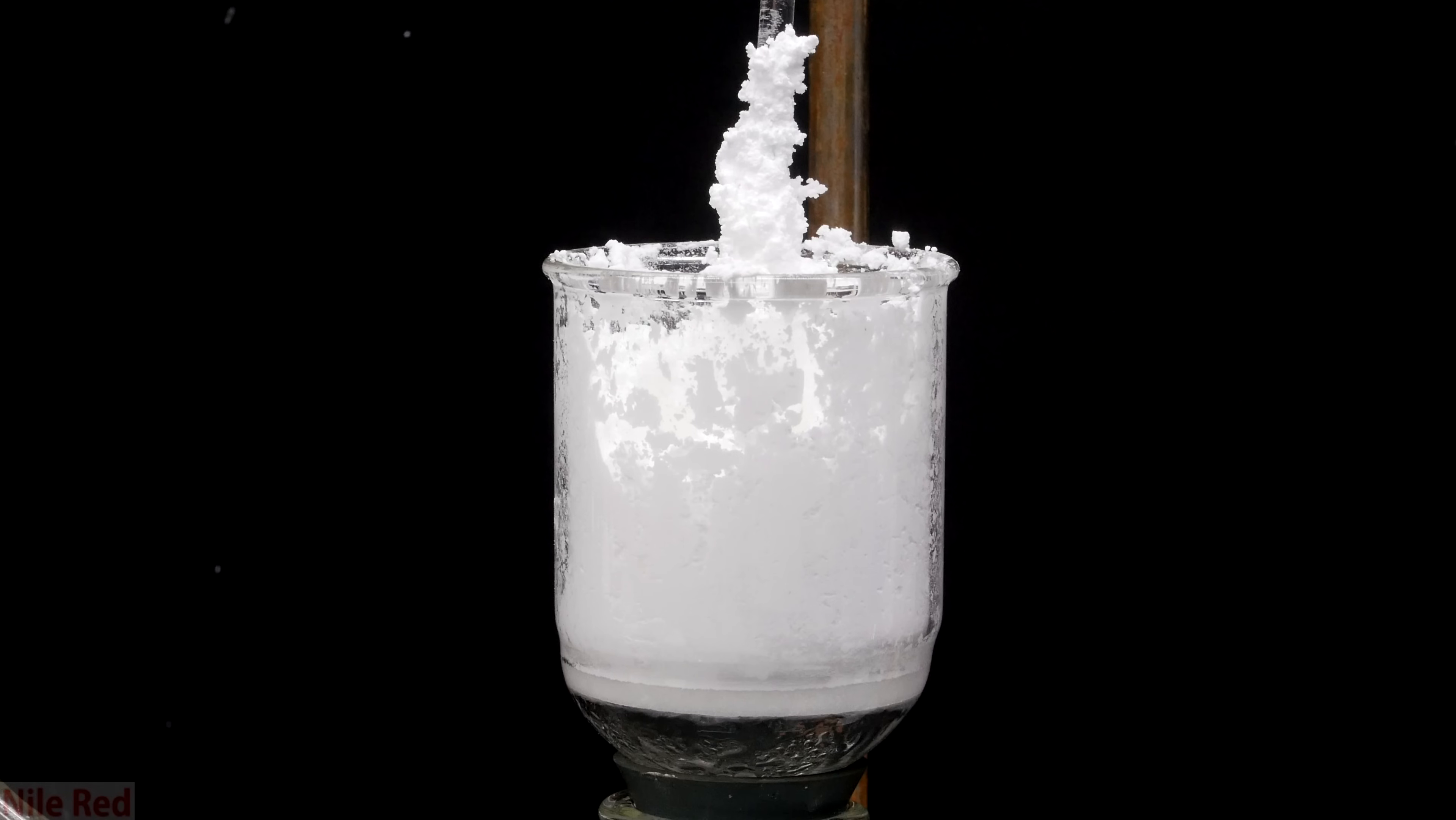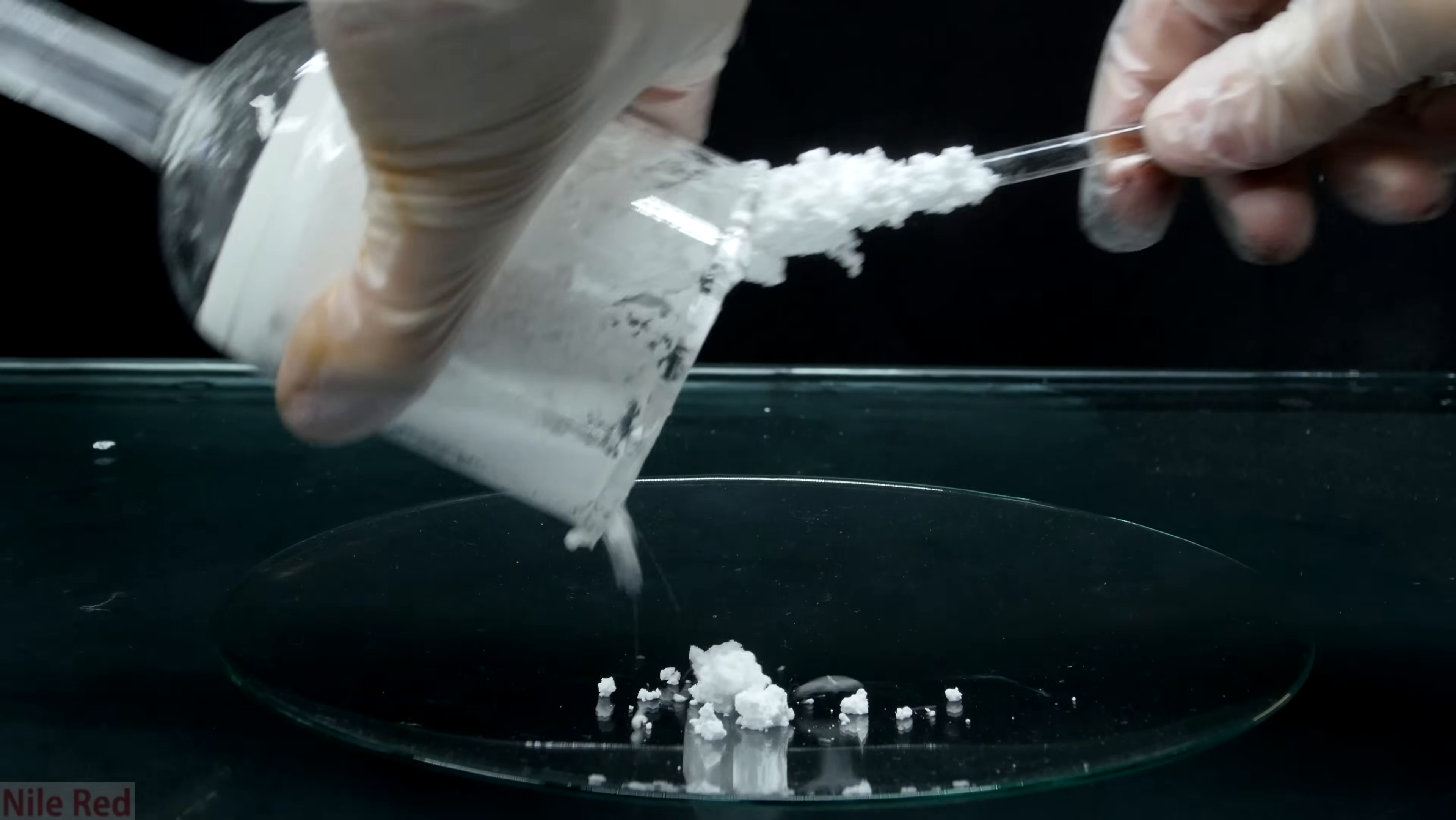After a few washings, I pull vacuum on it for a little while to try to dry it up. By pulling air through it, we can get a lot of the water out, but it's still never going to be fully dry.